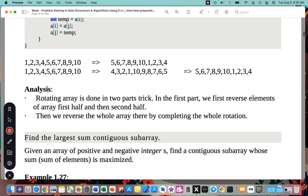Rotating array is done in two parts. First, we reverse the elements of the array's first half, then the second half, then we reverse the whole array, thereby completing the whole rotation.